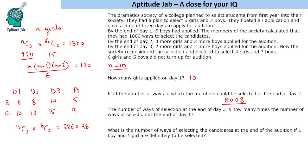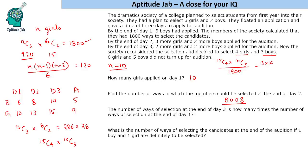The third question asks: the number of ways of selection at the end of Day 3 is how many times the number of ways of selection at the end of Day 1? At the end of Day 3 there are 15 girls and 10 boys, but the criteria has changed to selecting 4 girls and 3 boys. So the number of ways is 15C4 into 10C3. We divide this by 1800 to get the ratio. 15C4 = (15 × 14 × 13 × 12)/24 and 10C3 = 120.